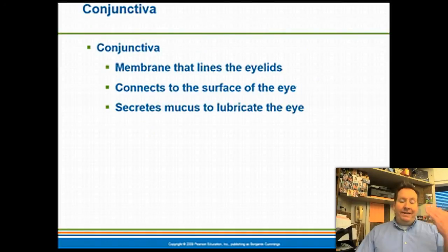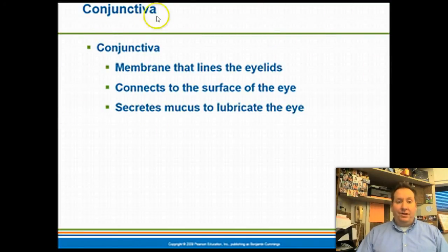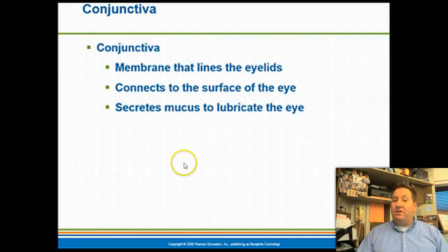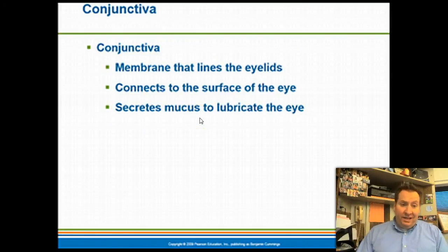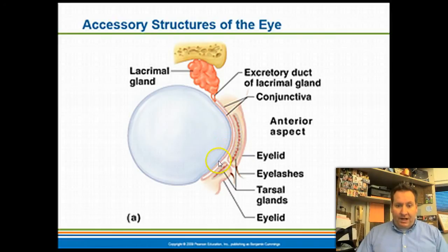On the underside of the eyelid is a membrane called the conjunctiva, which also fuses with the surface of the cornea. The conjunctiva secretes a mucus-like lubricant that helps reduce friction on the surface of the eyeball. Sometimes you can get a bacterial infection of the conjunctiva — this is what we call pink eye, also known as conjunctivitis, which causes the eyes to become red and inflamed.